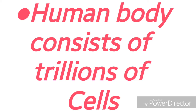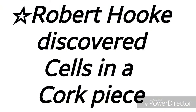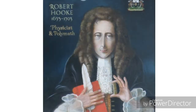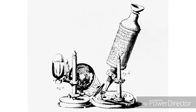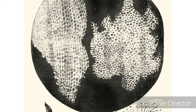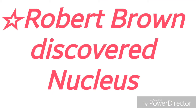Our human body consists of trillions of cells. In multicellular organisms, the body consists of many number of cells. Now let us see the historical background. A British scientist Robert Hooke discovered cells in a cork piece in the year 1665. At that time science was not much developed, so he made his own microscope. He observed very small compartments arranged in a honeycomb-like structure, and he called them cells.